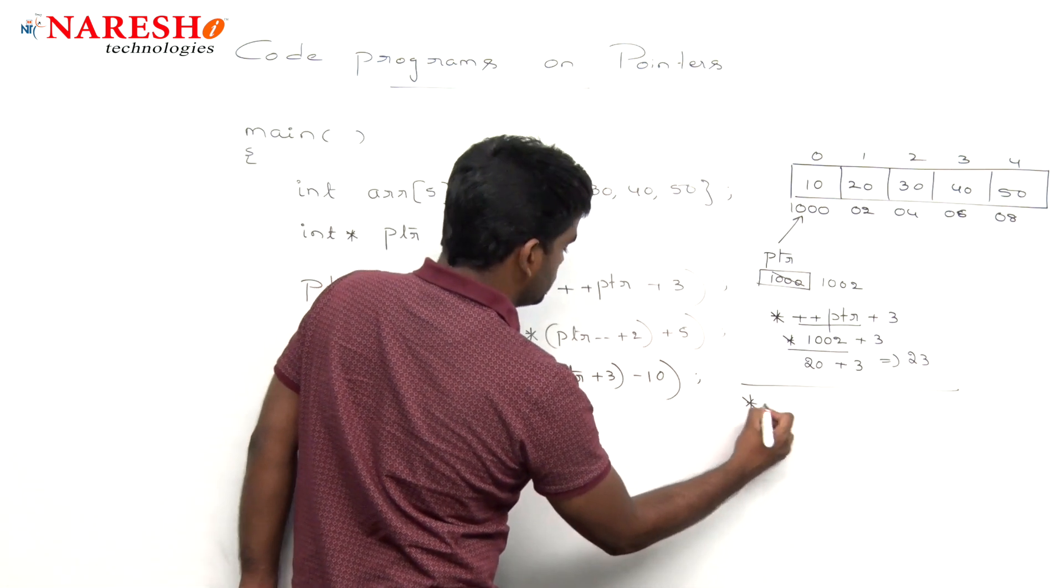When an expression contains modify operators, arithmetic operators, and pointer operators, first we should give the priority to modify operators, increment and decrement operators. And next we are giving the priority to pointer and then finally we use arithmetic operators. And of course, parenthesis having highest priority. Parenthesis. Now this one executes first and then it will go to this pointer. Right. This is how we are evaluating this one.